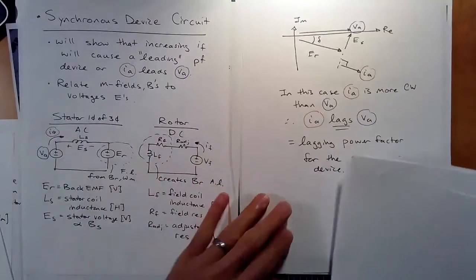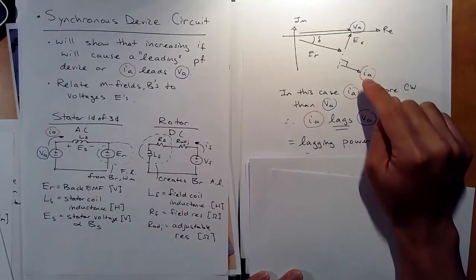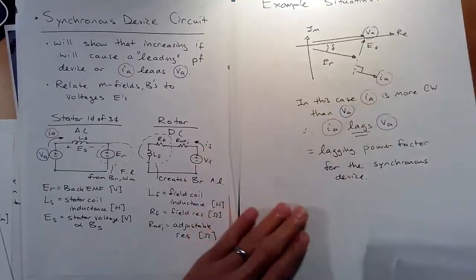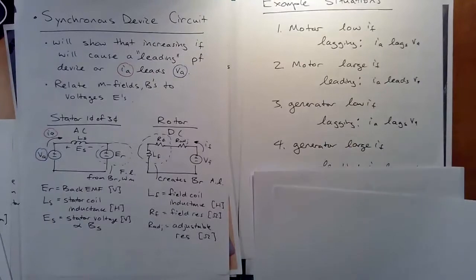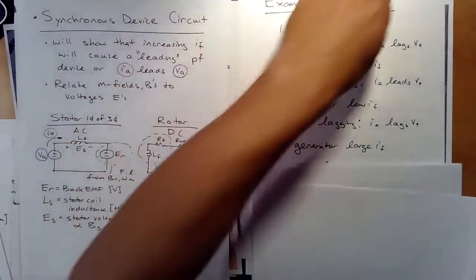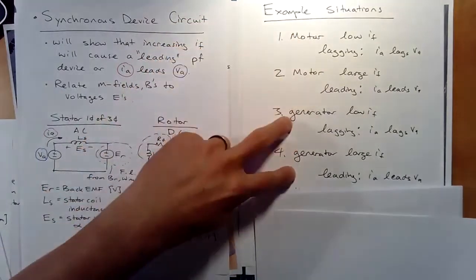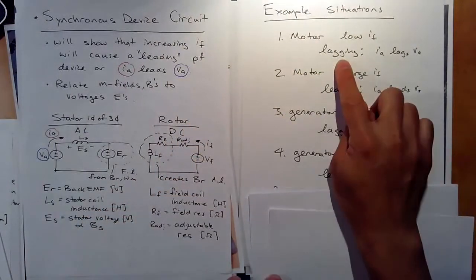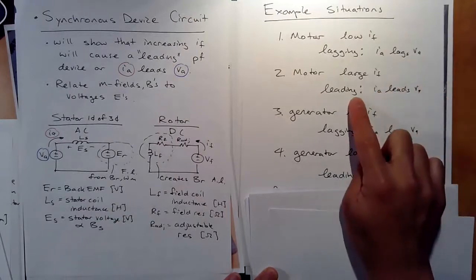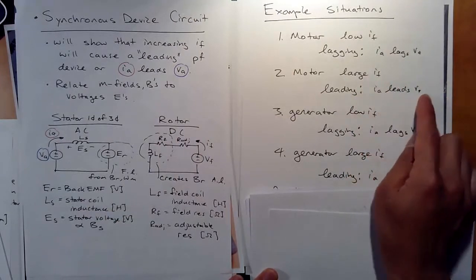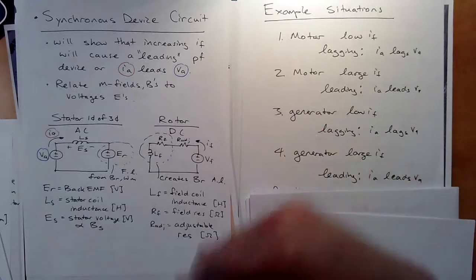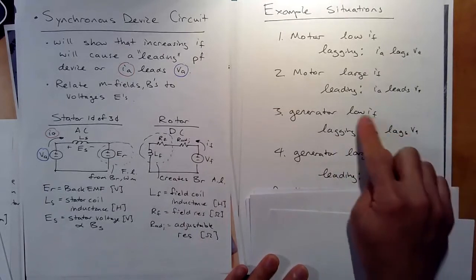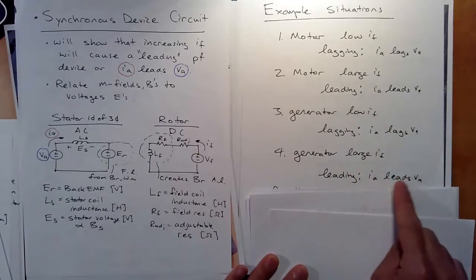The moral of this lecture is four cases: motor with low IF (lagging power factor), motor with high IF (leading power factor), generator with low IF (lagging power factor), and generator with high IF (leading power factor). Increasing field current produces a leading power factor situation — that's the key takeaway.